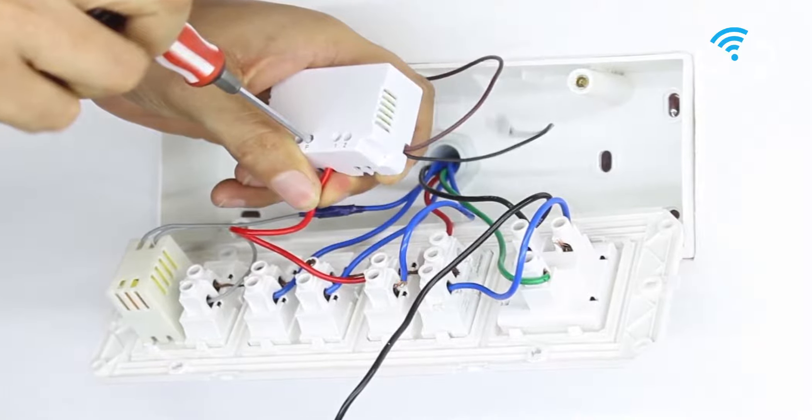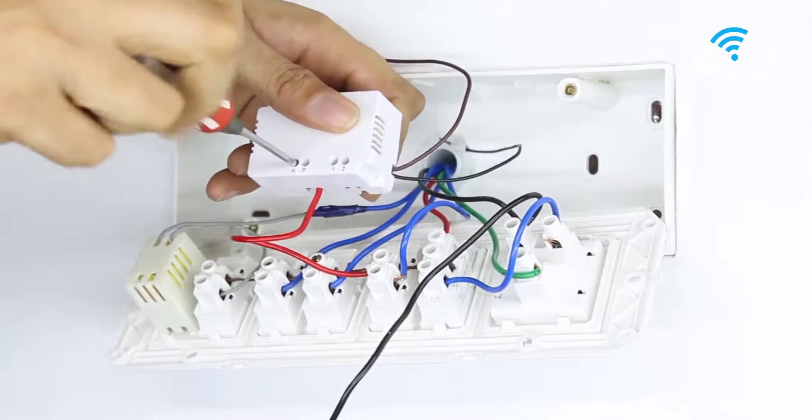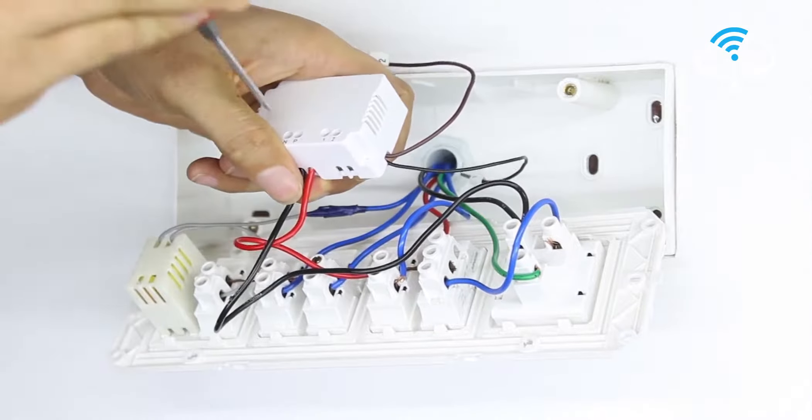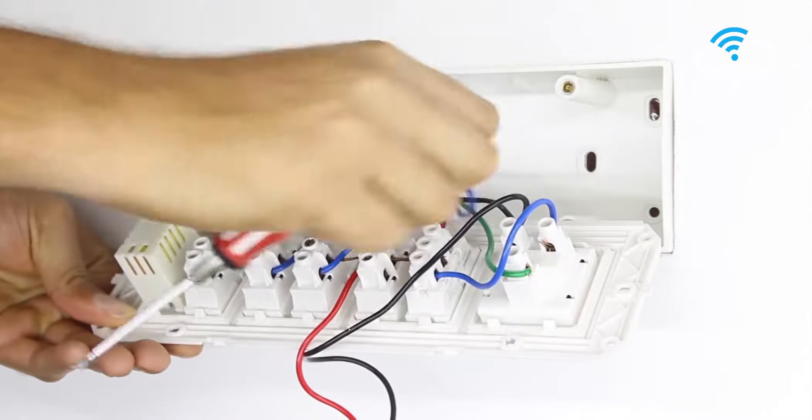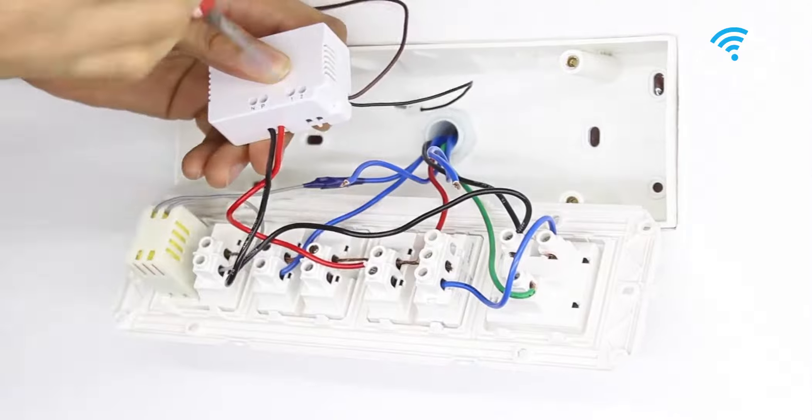Draw a neutral wire from the switchboard and connect it to the device where N is marked. Now connect the load wires of the appliances you want to automate at the numerical slots 1 and 2.